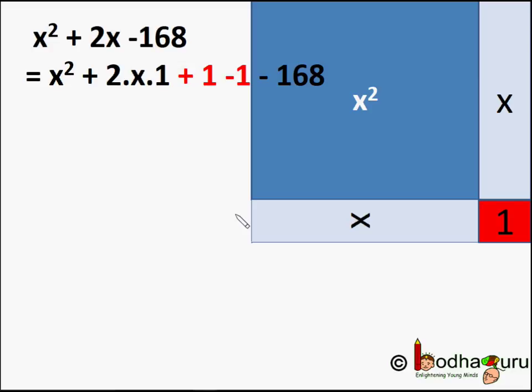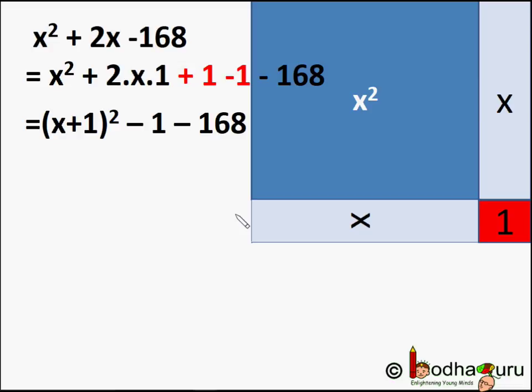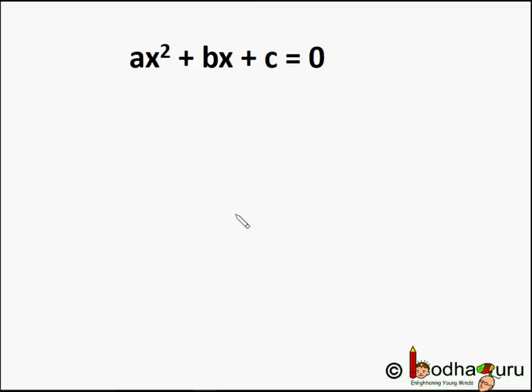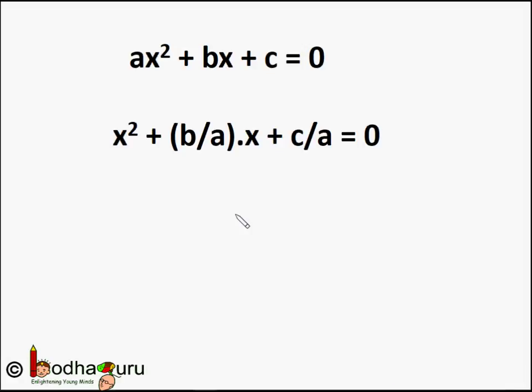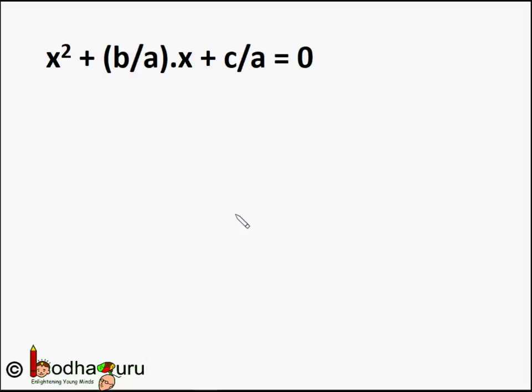So we can derive a general formula for finding the roots from that. Say the quadratic equation is ax² + bx + c = 0. For the completing the square method to work, we need to get rid of the coefficient of x² first, so we divide the equation by 'a' on both sides — both on the LHS and RHS. So we get x² + (b/a)·x + c/a = 0, because 0/a is equal to 0.